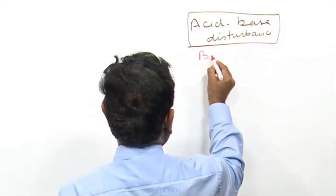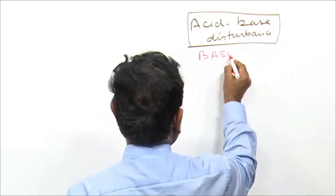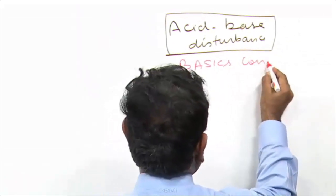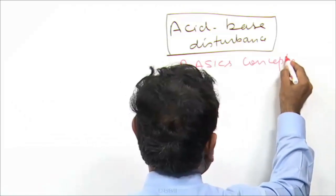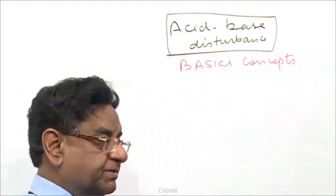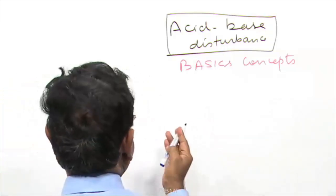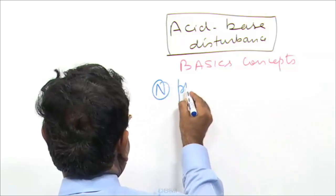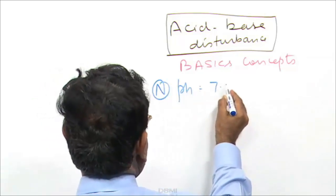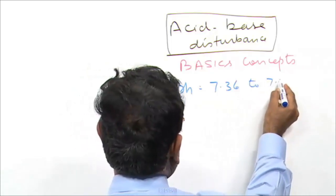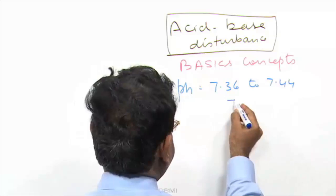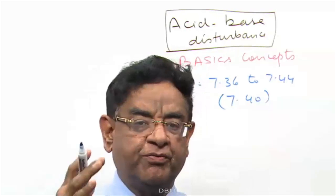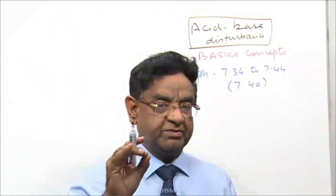Basics. Concepts. What is the normal pH of the blood? Normal is 7.36 to 7.44. For easy calculation, I am taking 7.40 as the normal pH of the blood.